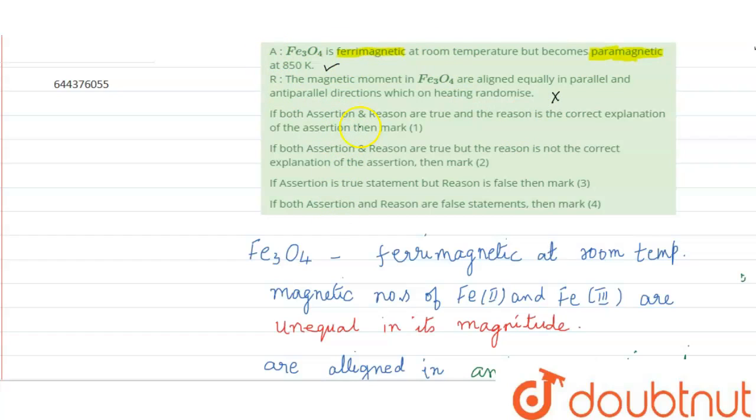So we know that the first one, A is true and R is false. Both assertion and reason are true? No, it is wrong. Both assertion and reason are true, but the reason is not the correct explanation? No. Assertion is true statement, but reason is false. So both assertion and reasons are false? This is also wrong. So this is true and false.